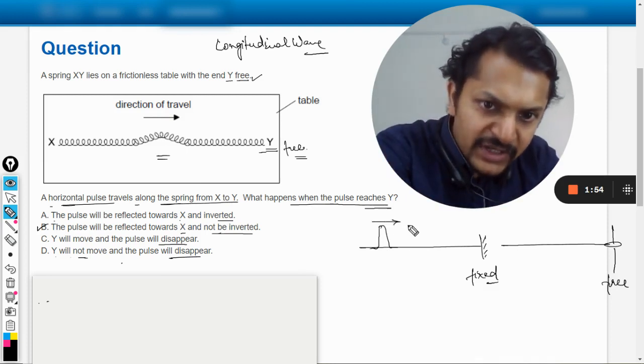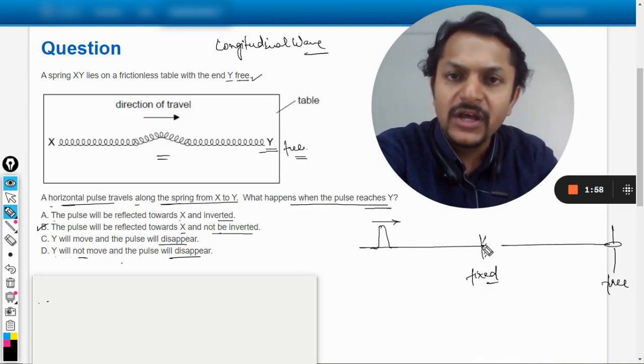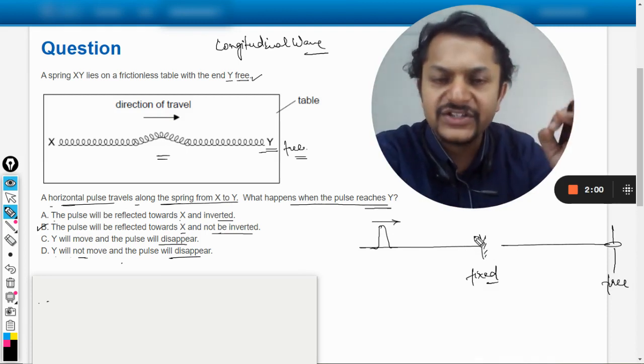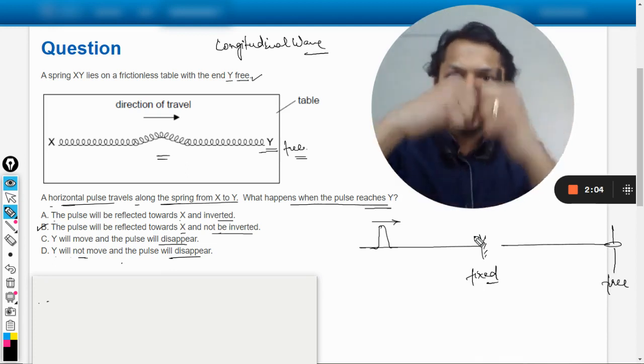When this wave is coming here, so it will hit this point, the Y point. But because it's rigid and fixed, it is not going to move up. So instead of going up, it is going to create an action-reaction pair there.